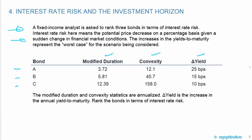Bond A has modified duration 3.72, convexity 12.1, and change in yield 25 basis points. Bond B has modified duration 5.81, convexity 40.7, and change in yield 15 basis points. Bond C has modified duration 12.39, convexity 158, and change in yield 10 basis points. The modified duration and convexity statistics are annualized, and the change in yield is the increase in the annual yield to maturity. We're going to calculate the estimated price change for each of the bonds using the formula.